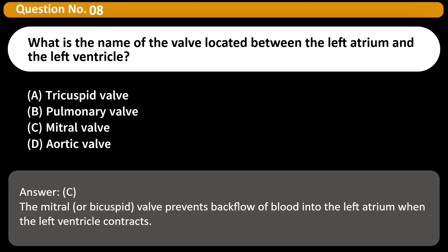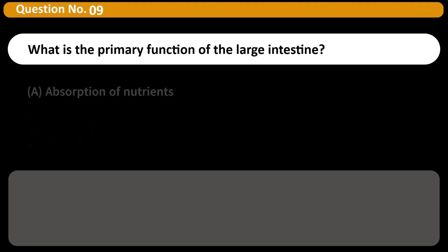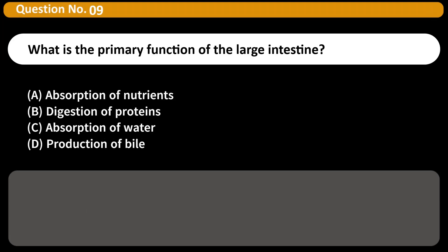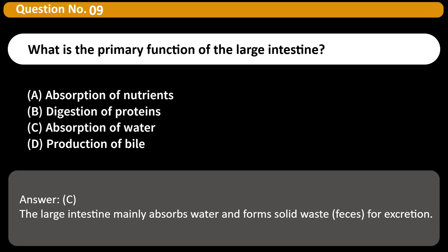What is the primary function of the large intestine? A) Absorption of nutrients, B) Digestion of proteins, C) Absorption of water, D) Production of bile. Answer: C. The large intestine mainly absorbs water and forms solid waste (feces) for excretion.